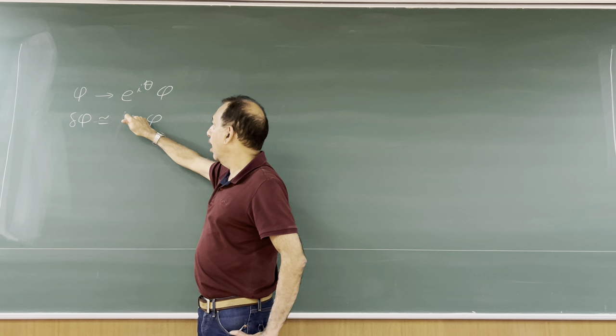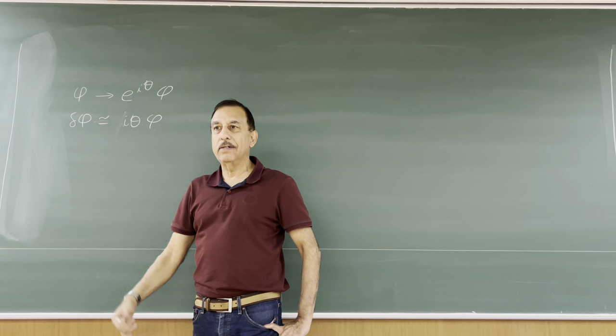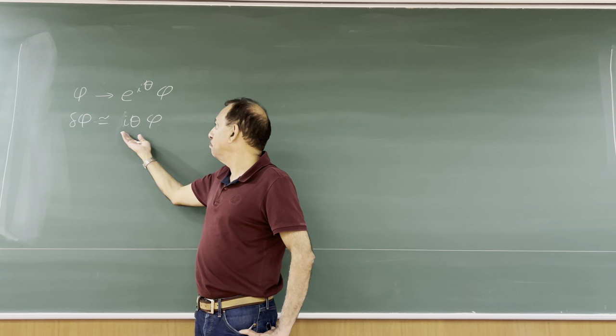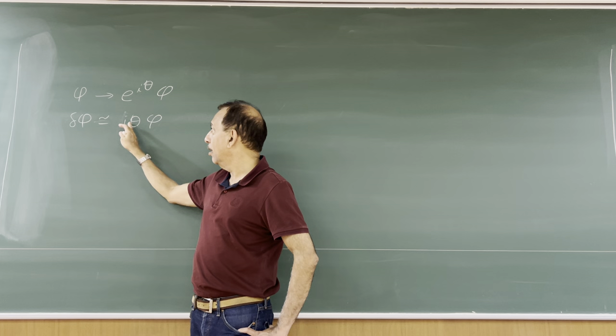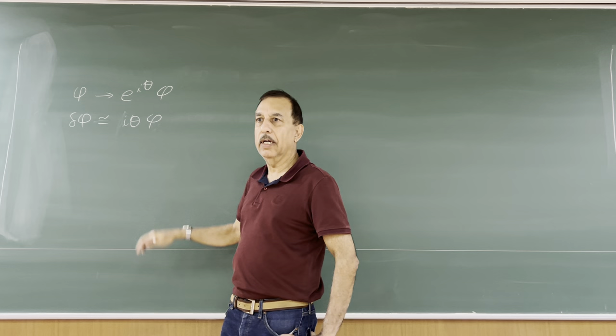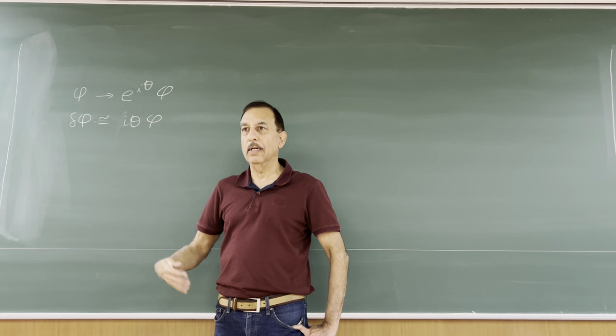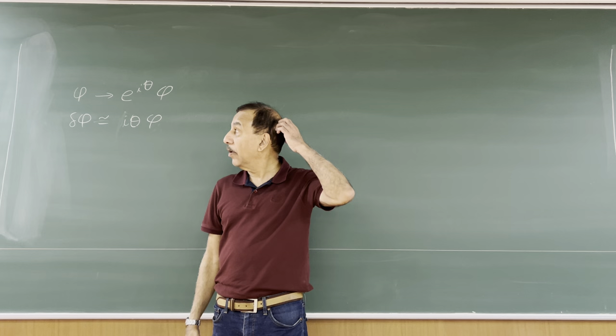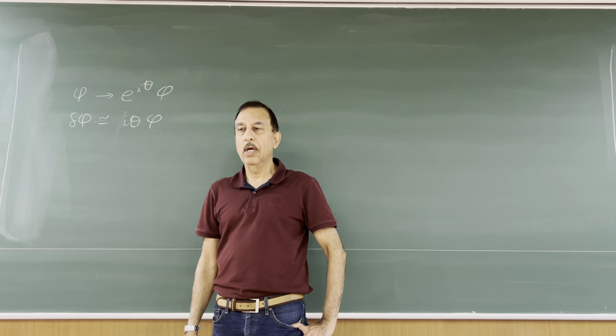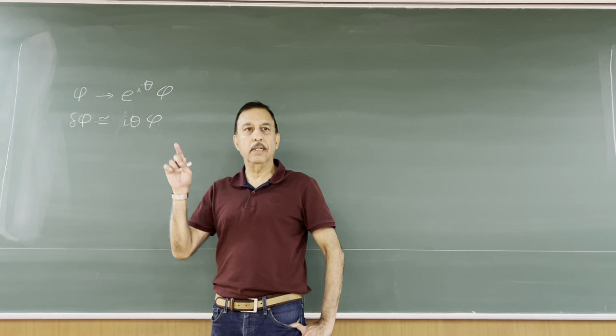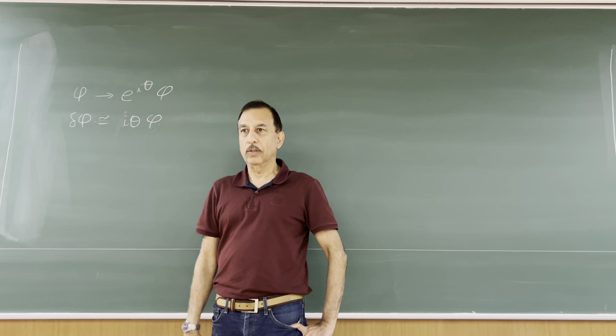The algebra of U(1) is trivial — it just has the identity as its generator. This is a transformation by a parameter theta times i times the generator of the algebra times phi. The relation you are asking about is the relation between a Lie algebra and a Lie group. It is not unique: one Lie algebra can correspond to more than one Lie group. For example, SU(2) and SO(3) have the same Lie algebra but are two different groups — they differ by a double covering.